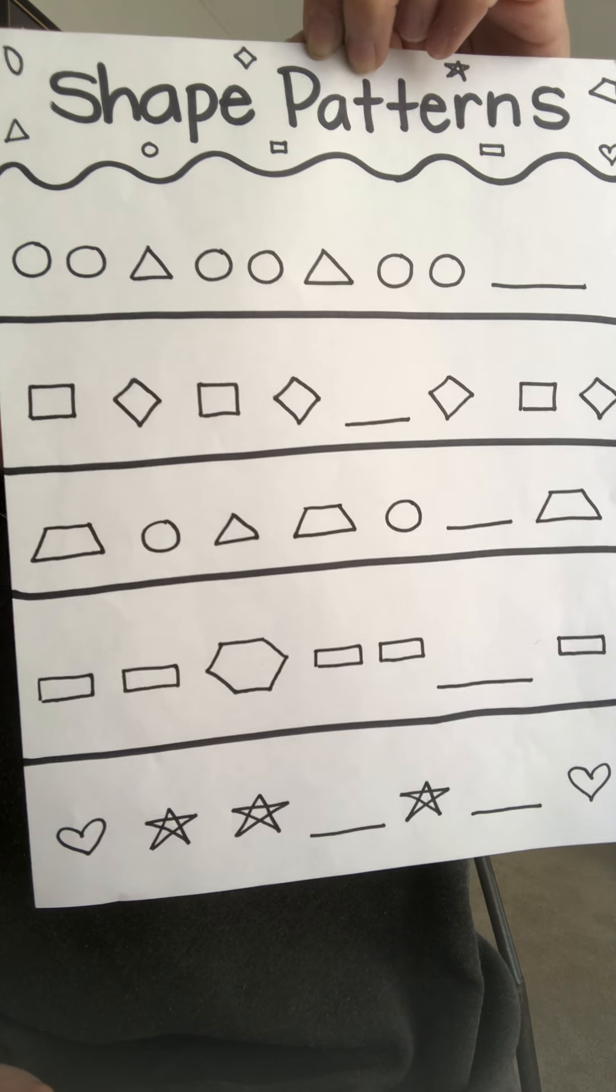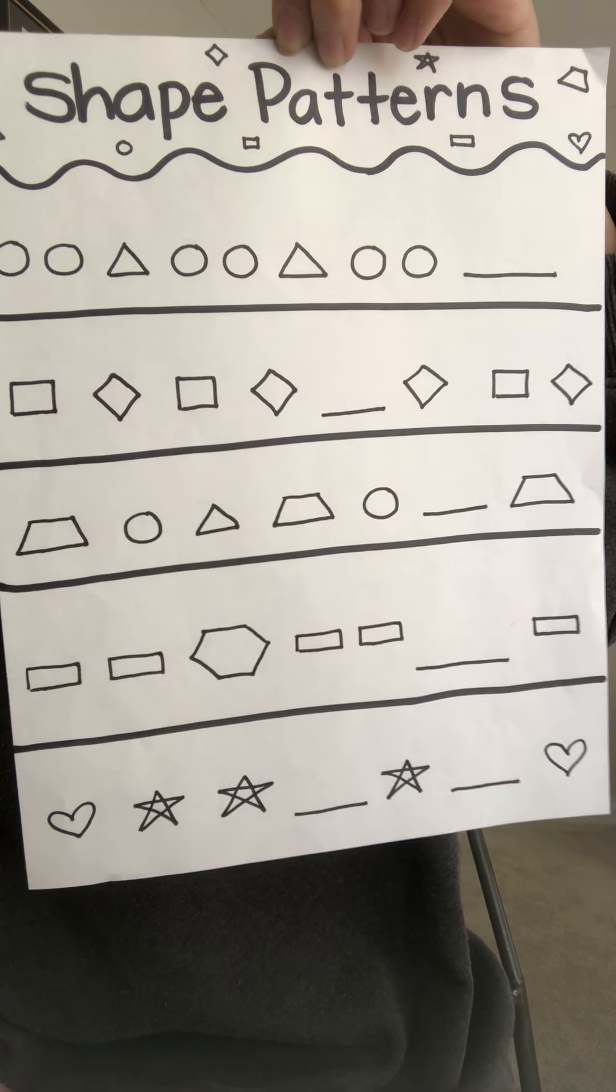And lastly, I'm going to give your parents a pattern, shape pattern worksheet that you guys are going to do. All right? So let's do the first one together. Circle, circle, triangle. Circle, circle, triangle. Circle, circle. What shape comes next? Triangle. Awesome job.